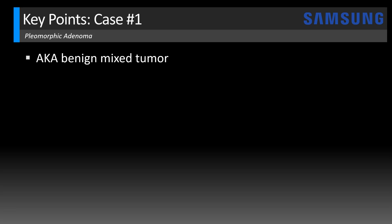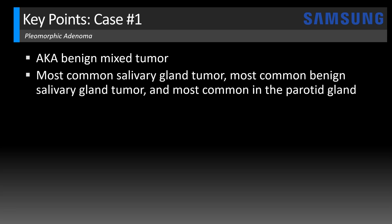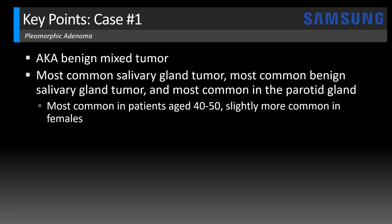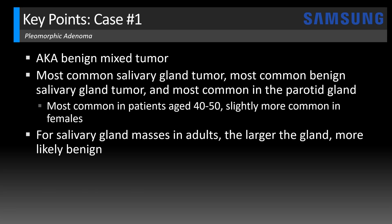Pleomorphic adenomas are also known as benign mixed tumors. These are the most common salivary gland tumor, the most common benign salivary gland tumor, and they're most commonly found in the parotid gland. We see them most commonly in patients age 40 to 50, slightly more so in female patients. A good general rule for salivary gland masses in adults: the larger the salivary gland, the more likely the mass is benign. The parotid gland is the largest, so about 80% of its tumors will be benign.